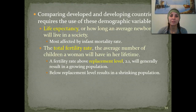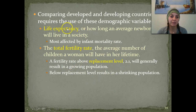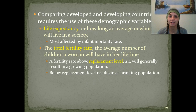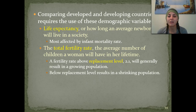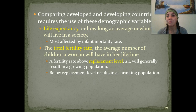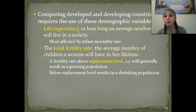Comparing developed versus developing countries requires the use of demographic variables. We look at things such as life expectancy — how long an average newborn will live in society. In developed countries like the United States, we're going to have a much higher life expectancy, typically in the upper 70s. The life expectancy in someone in a developing country is going to be much lower — sometimes those people don't even live into their 40s, because they don't have access to clean water, food, or medical care.